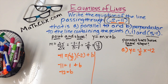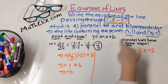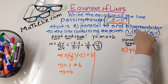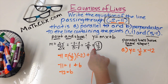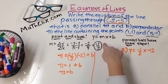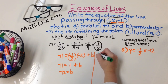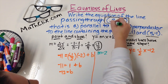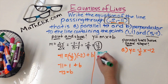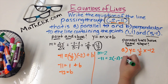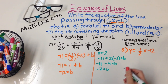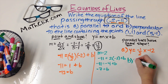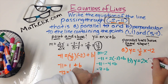Now for part b, you want to do the same thing, except the line will be perpendicular. Perpendicular lines have slopes whose product is negative 1. So you ask: what do I multiply negative one half by to get negative 1? It needs to be positive and it's going to be the reciprocal, so it's just 2. We use m equal to 2, the same point, and repeat the steps. Negative 11 equals 2 times negative 2 plus b. Negative 11 equals negative 4 plus b. Adding 4 gives b equals negative 7. So the answer for part b is y equals 2x minus 7.